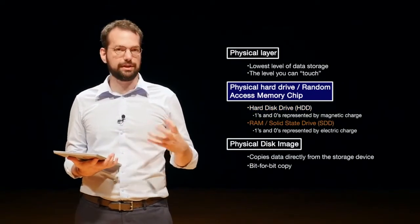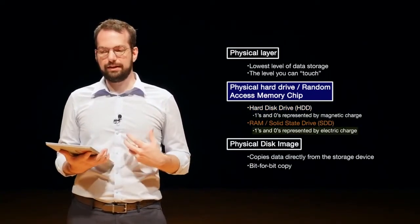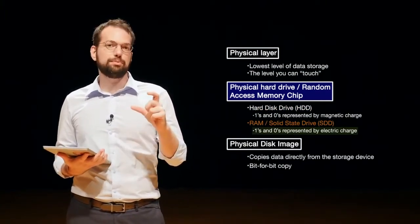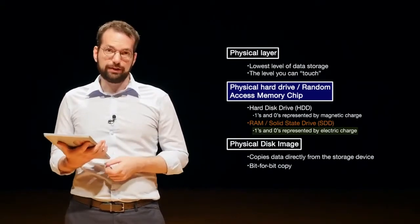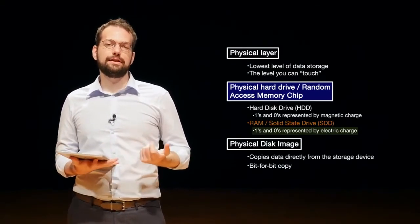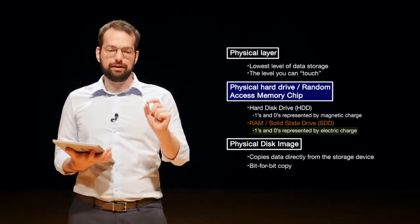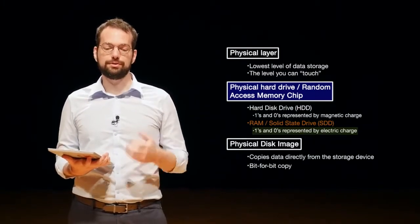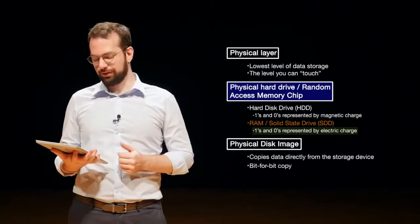There's also newer types of hard drives coming out now and also random access memory. Those types of hard drives are called solid state drives, kind of like USB sticks and newer hard drives. In those hard drives, the ones and zeros, the physical layer is represented by an electric charge. So rather than having a physical magnetic charge, we have a physical electric charge. Solid state drive: electric charge. Hard disk drive: magnetic charge.